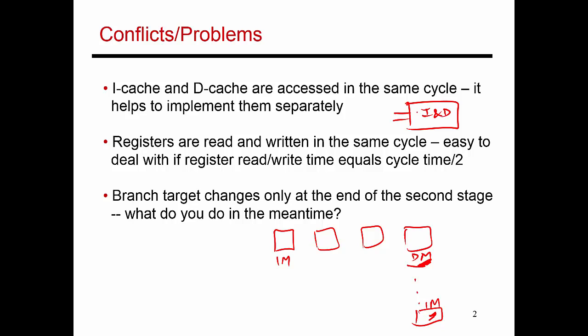The observation here is that instructions can be placed in one specific storage unit called the instruction memory, and data can be placed in a separate storage unit called the data memory. By making these two structures distinct, each with a single read port, you can perform one instruction read at the same time as a data read. Had you built a unified structure, there would have been a structural conflict. By designing the structures more carefully, this conflict is avoided.